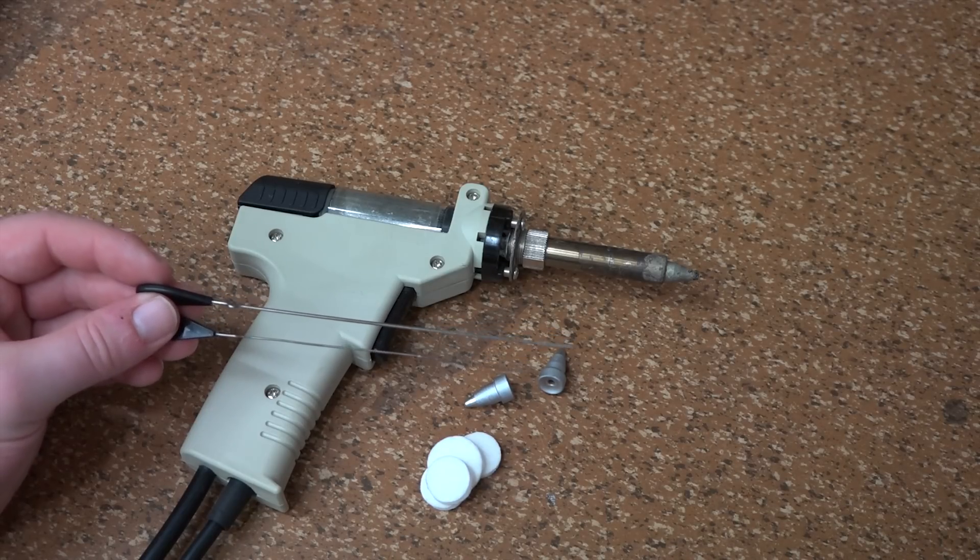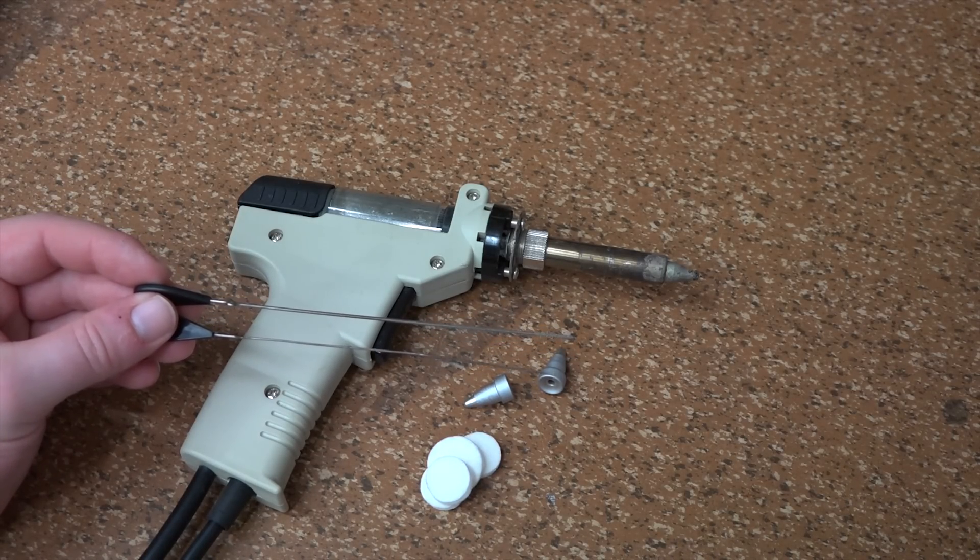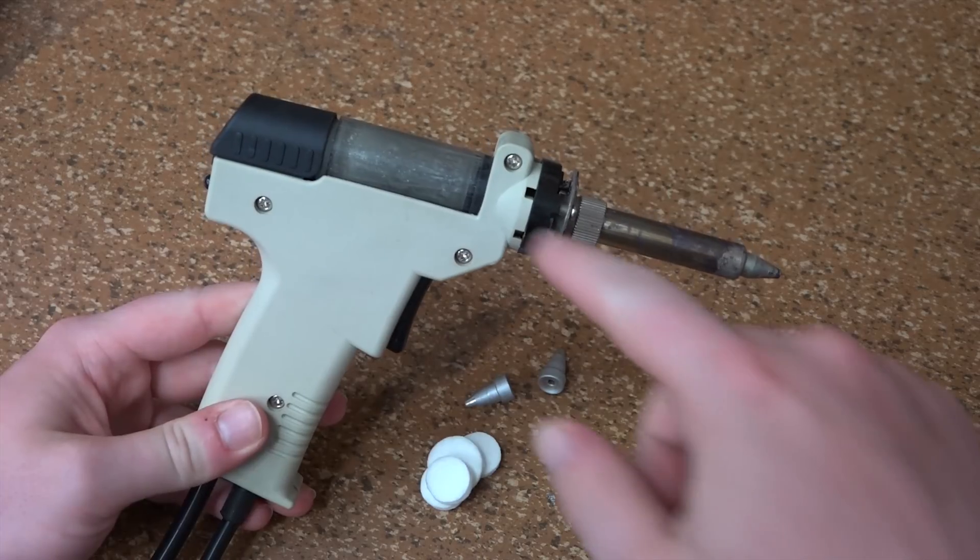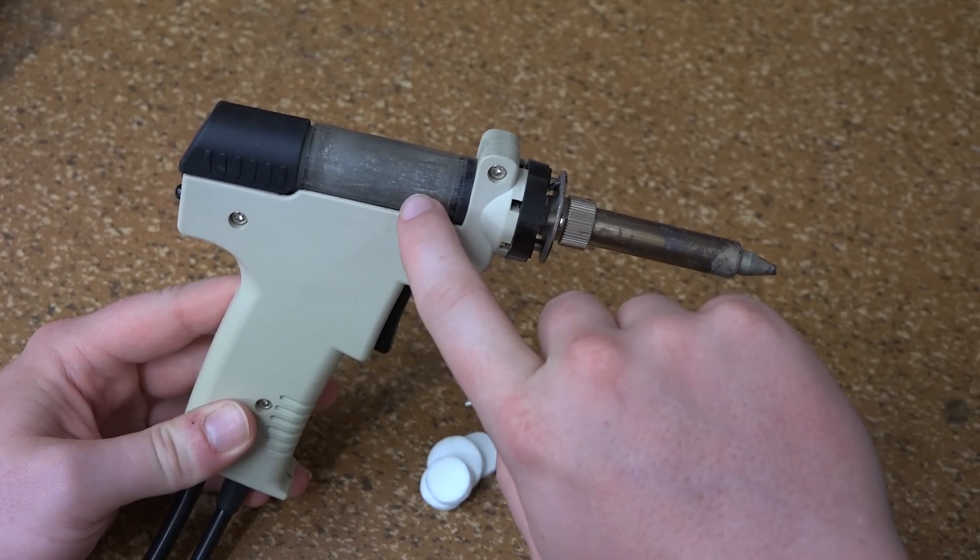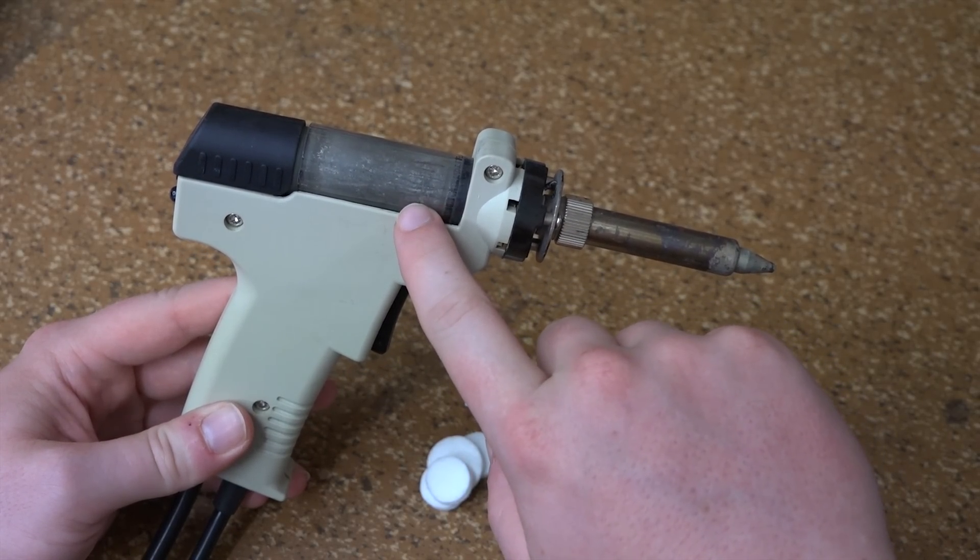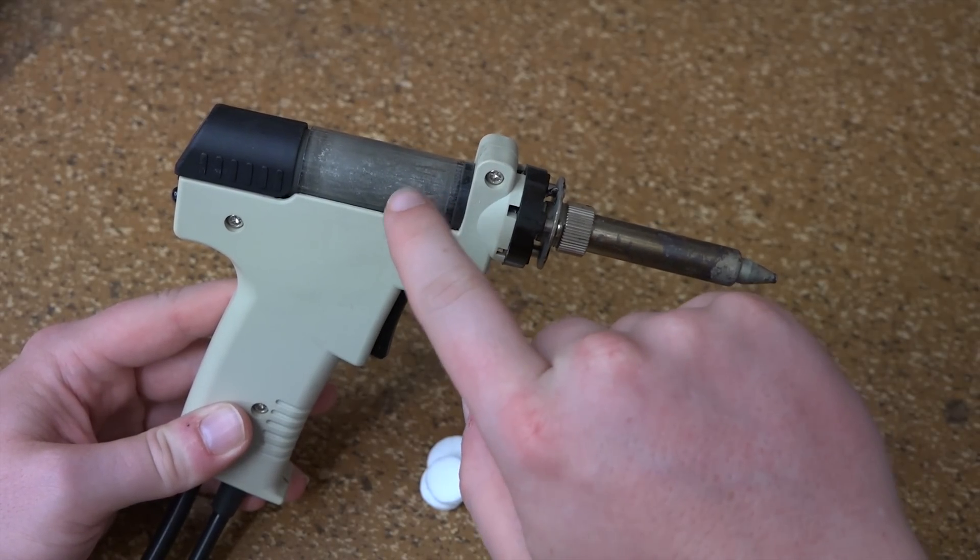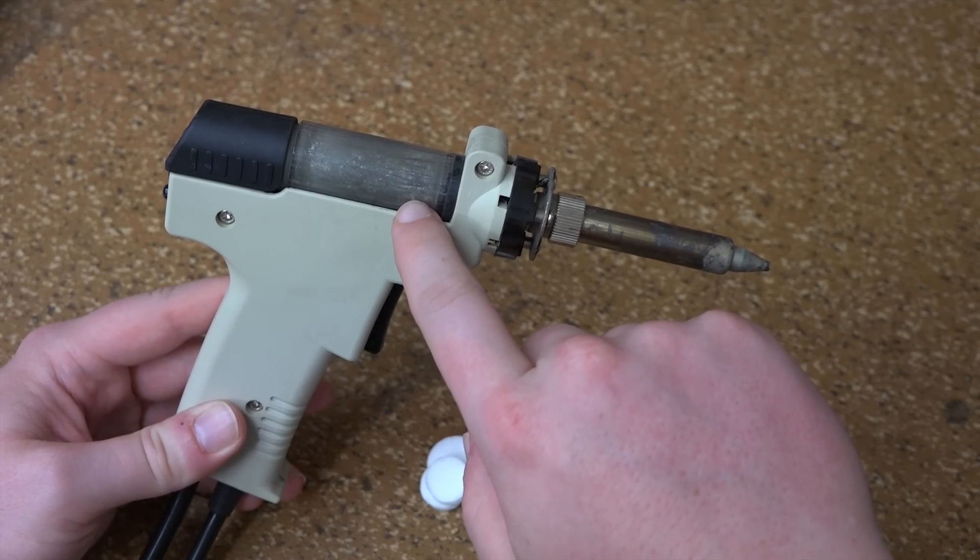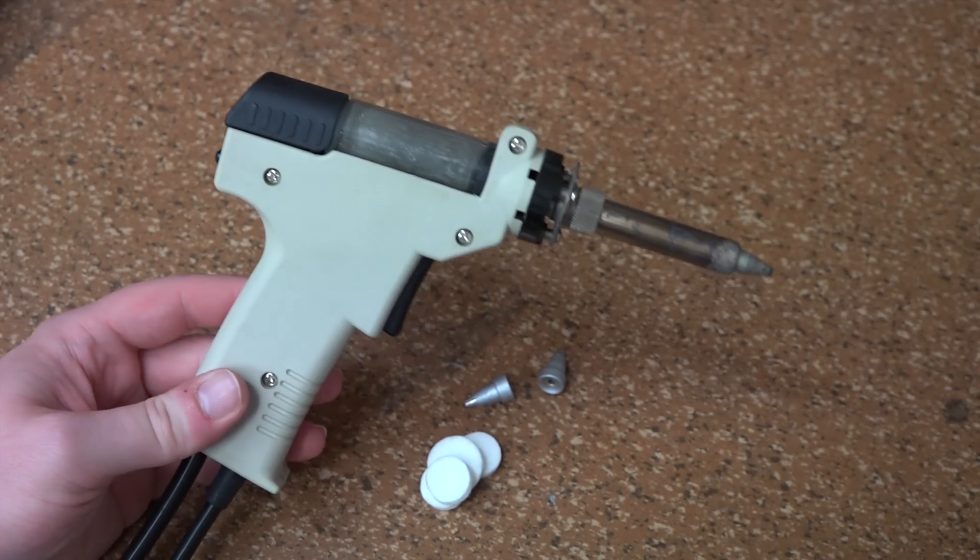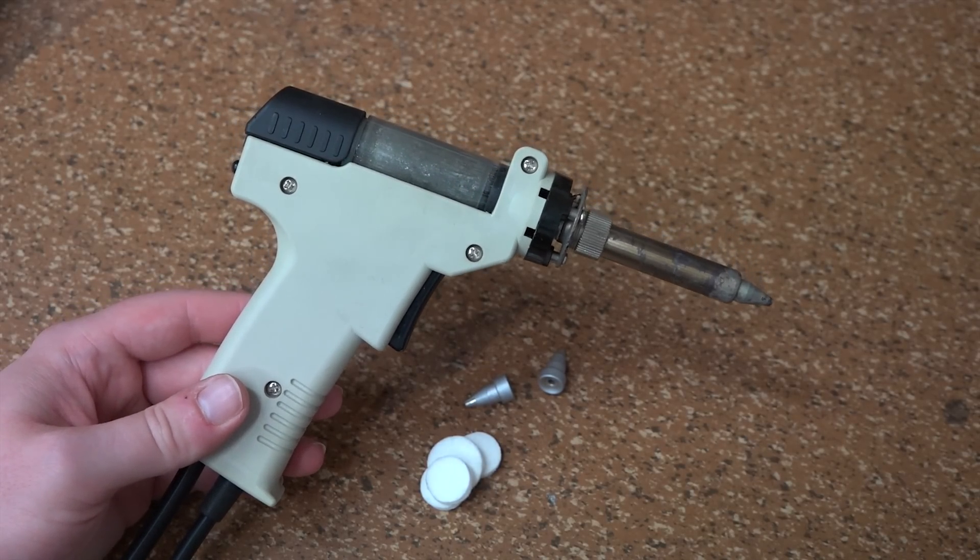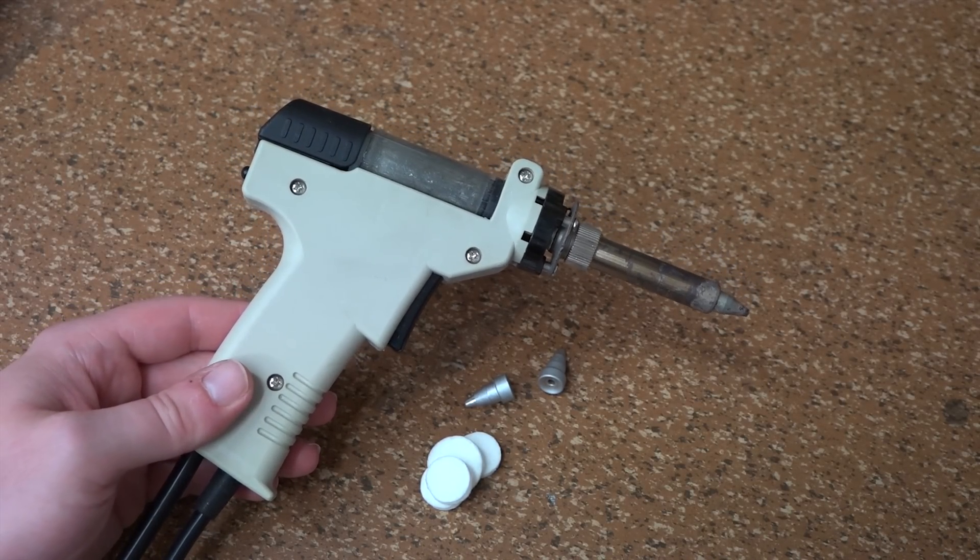Now, the cleaning pins, again, you can get replacements for these. They cost about nine euro. This, for example, up here, this reservoir for the solder that you sucked off the circuit boards, this is real glass. So, if you would drop this, you'd be in trouble, because there is no replacement for that. You will have to replace the entire gun, but it's not the end of the world. A whole entire replacement gun costs about 20 euro on eBay.